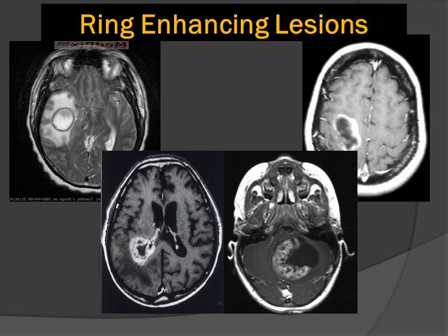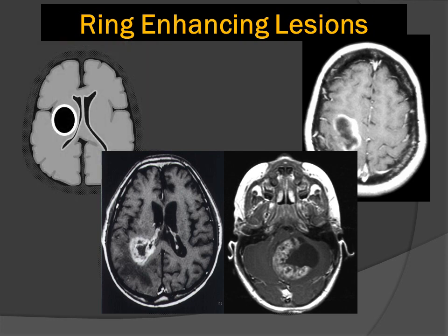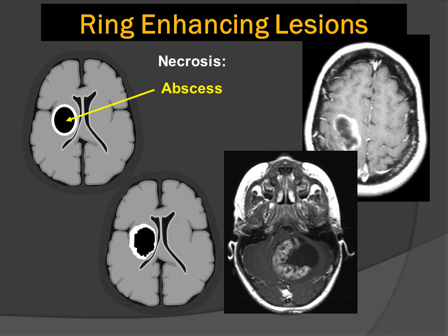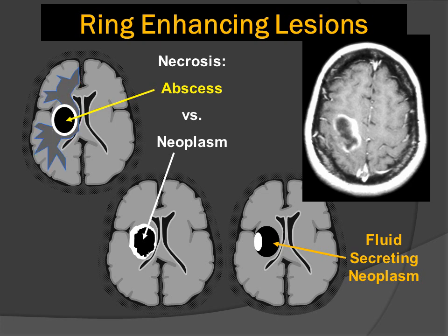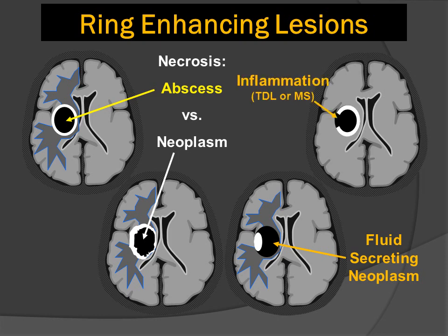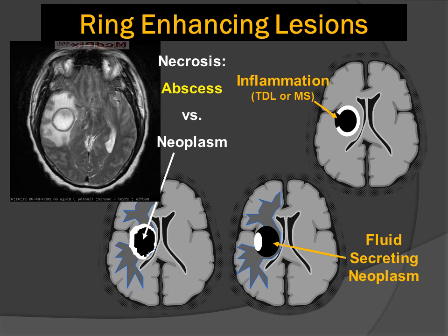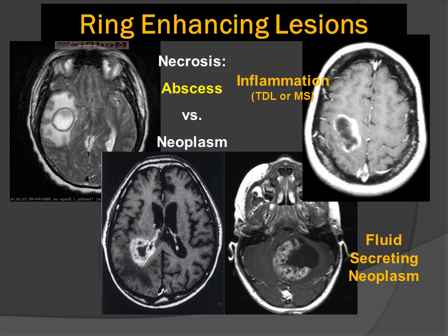Going back to the four types of ring-enhancing lesions: one is round and smooth, suggesting an abscess; one is very irregular with a shaggy inner margin, suggesting a necrotic neoplasm; one shows an incomplete rim of enhancement, often seen in fluid-secreting tumors, which can also produce the cyst and mural nodule morphology in the posterior fossa or cerebellum. We oftentimes see surrounding vasogenic edema with abscesses and neoplasms. When we have tumefactive demyelination, a critical feature is identifying an incomplete rim of enhancement, suggestive of an advancing zone of inflammation.